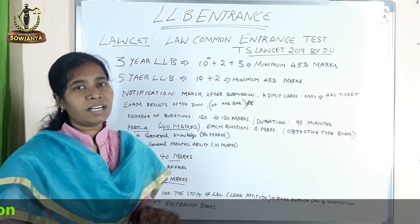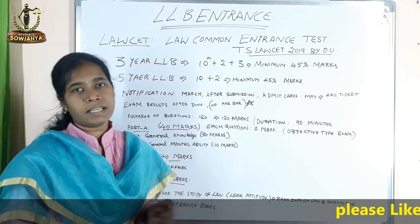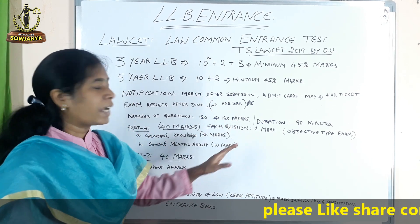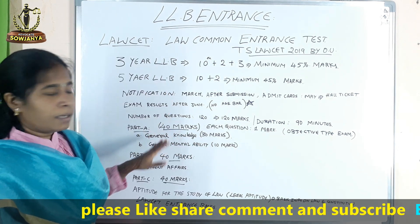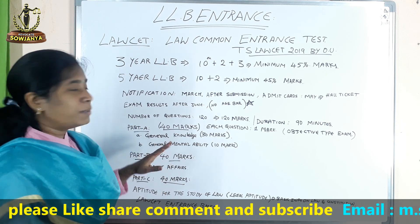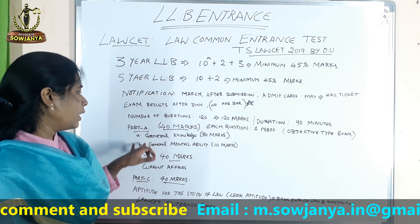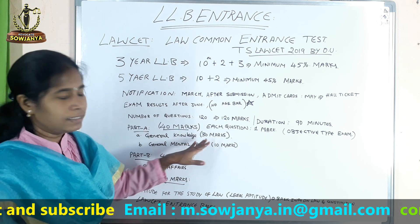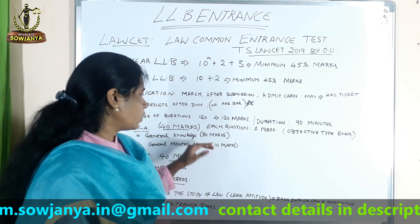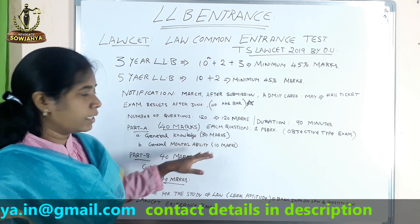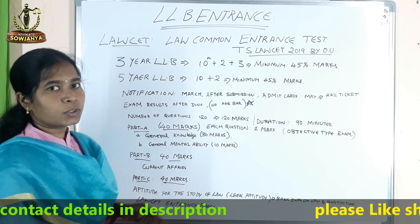The examination pattern is: number of questions is 120, and total marks is 120. Each question carries 1 mark. Duration time is 90 minutes, that is 1 and a half hours. The exam has Part A, Part B, and Part C, and it is an objective type exam. Part A is General Knowledge for 30 marks. Part B is General Mental Ability test for 40 marks. Current affairs are also included.